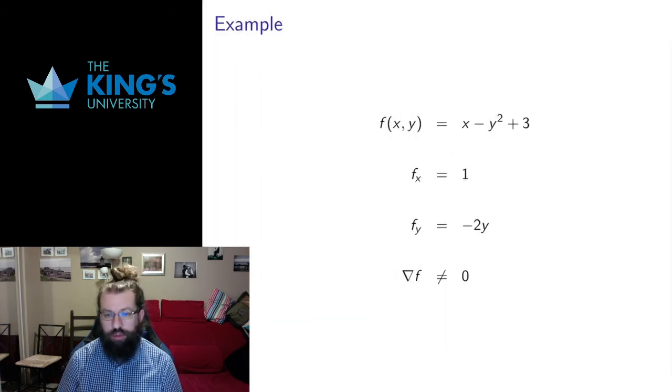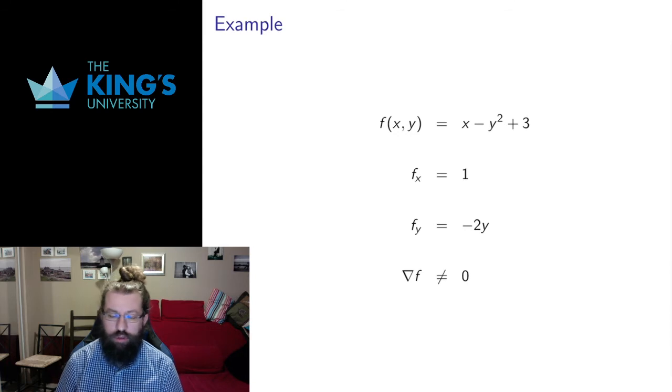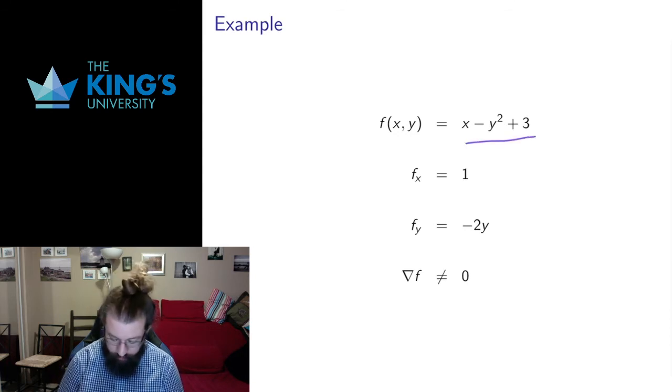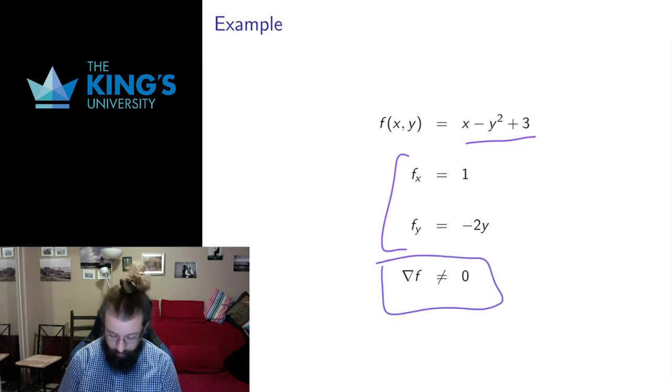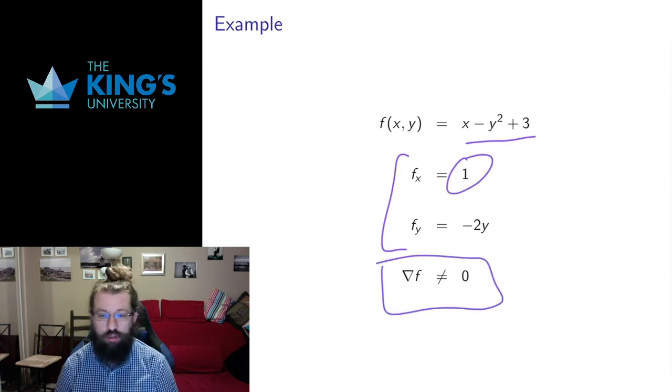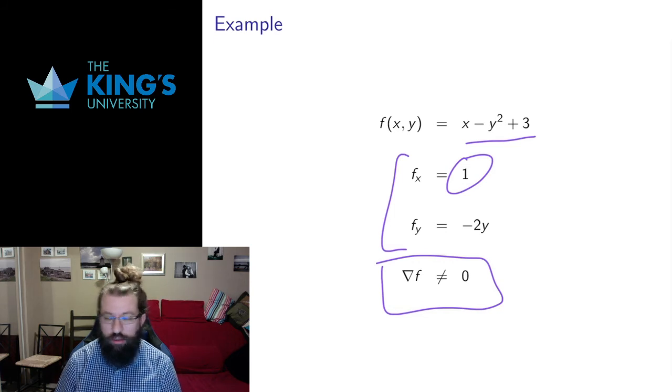I want to do two examples to indicate some of the different ways in which this works, and some of the situations that can come up. Here's a relatively simple scalar field, I take its partial derivatives, partial derivative in x is constant one, partial derivative in y is negative two y. This gradient can never be zero because the x partial is constant one. So this thing has no extrema.